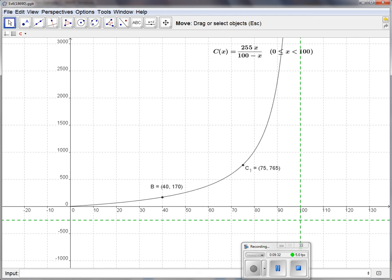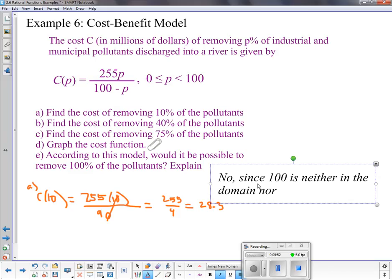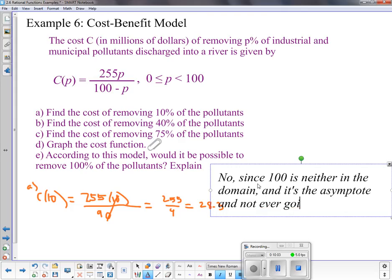it's the asymptote. So it's not going to go there. So the answer to this question is no, since 100% is neither in the domain and it's the asymptote, we're not ever going to be 100% clean.